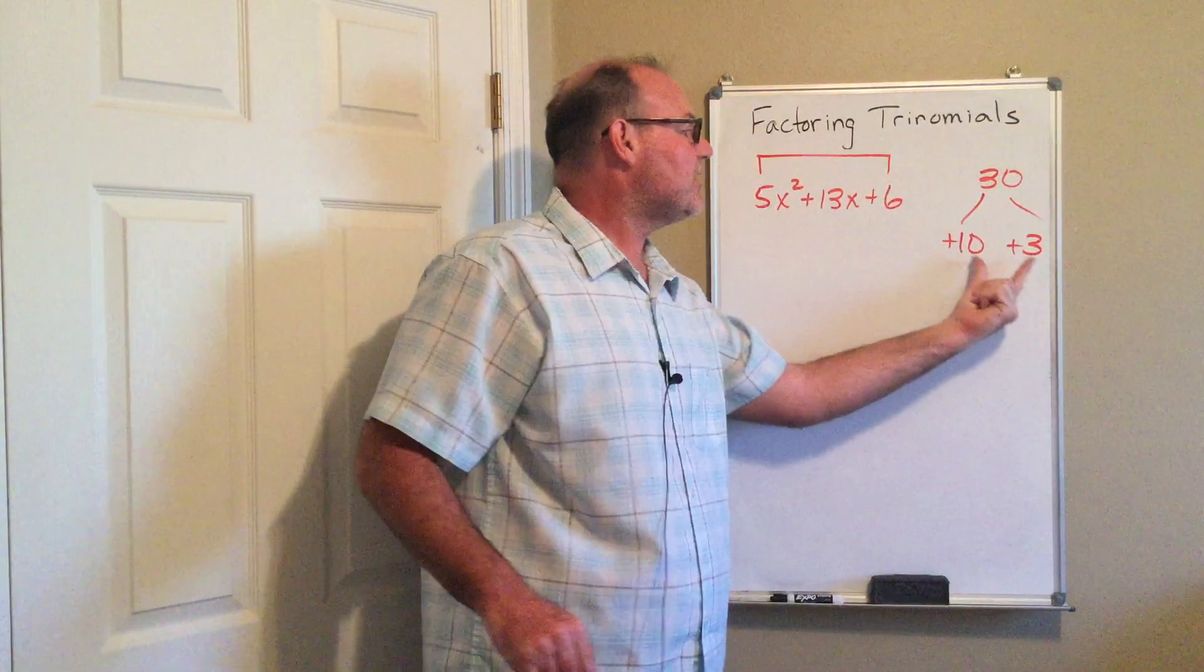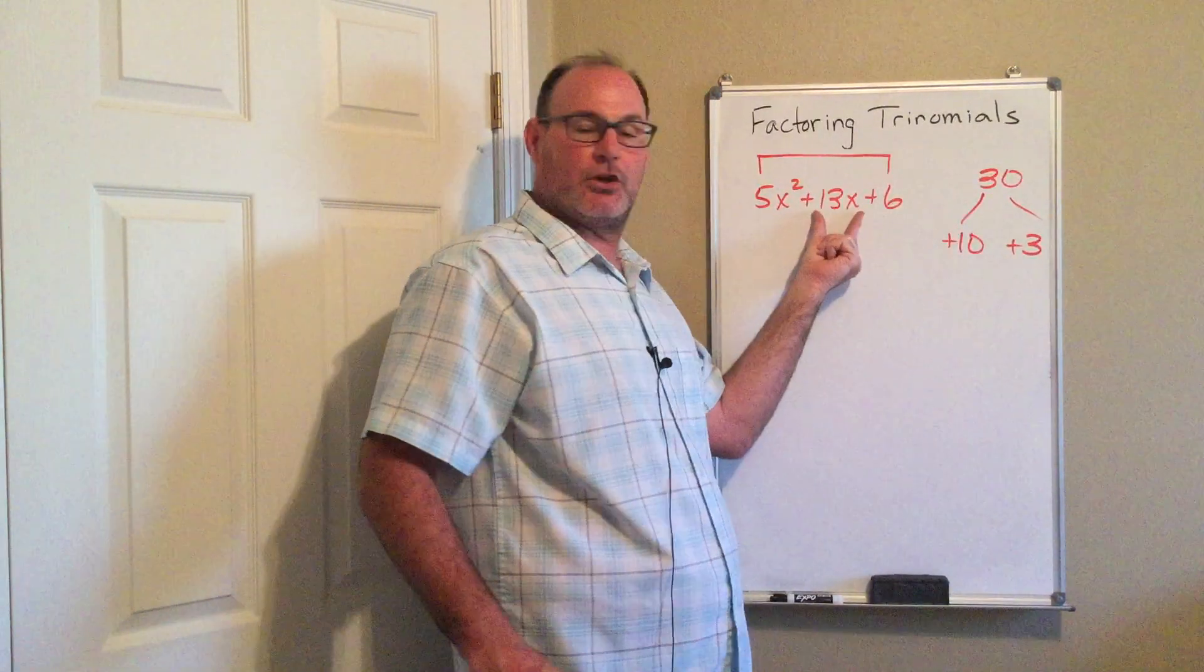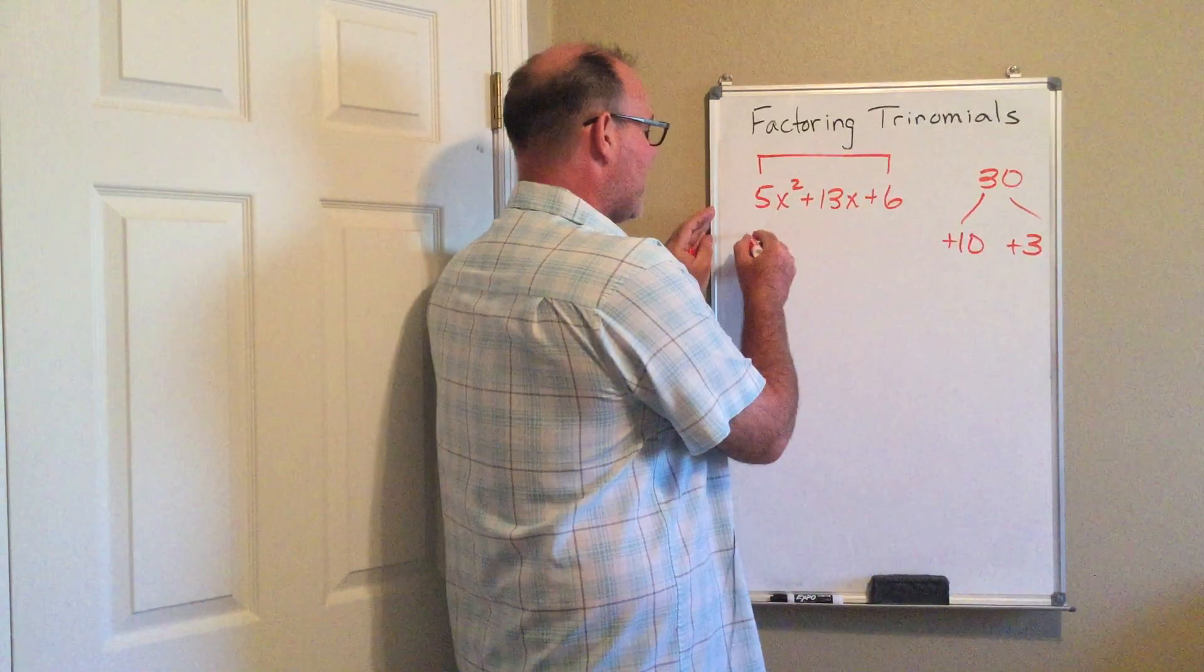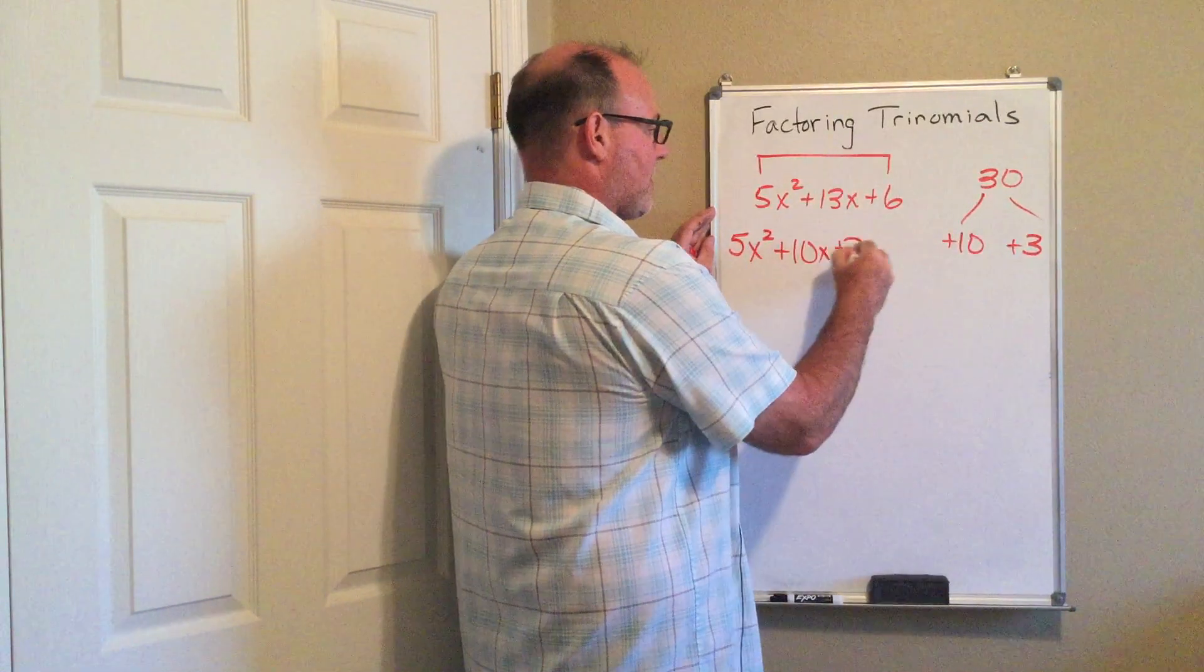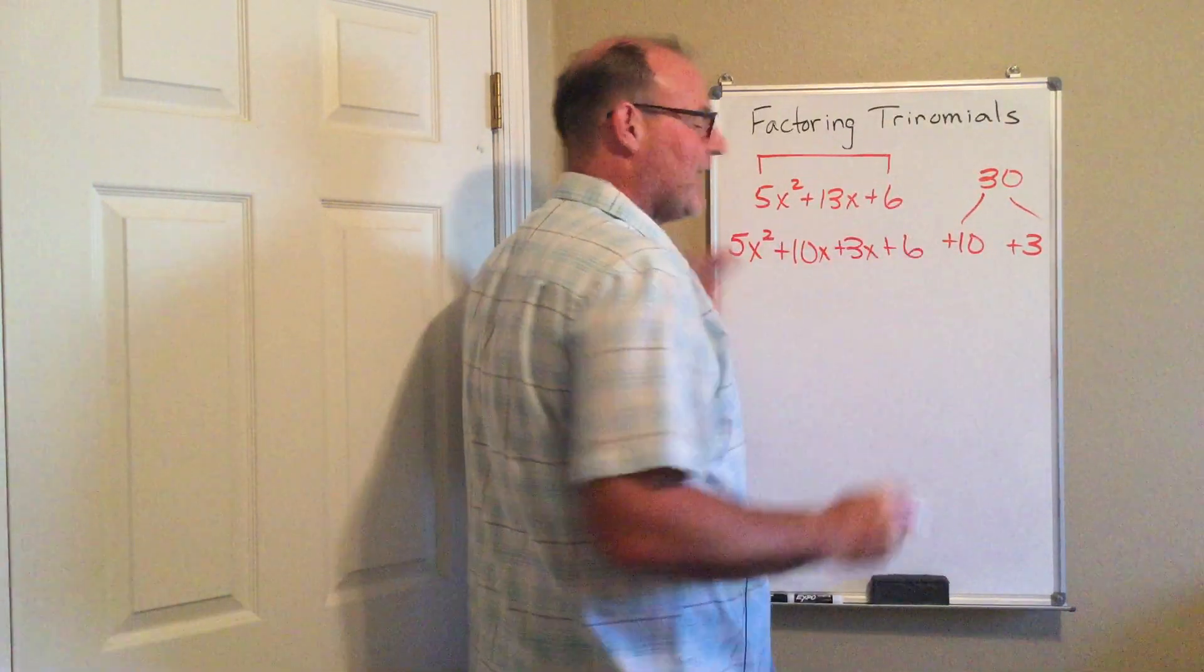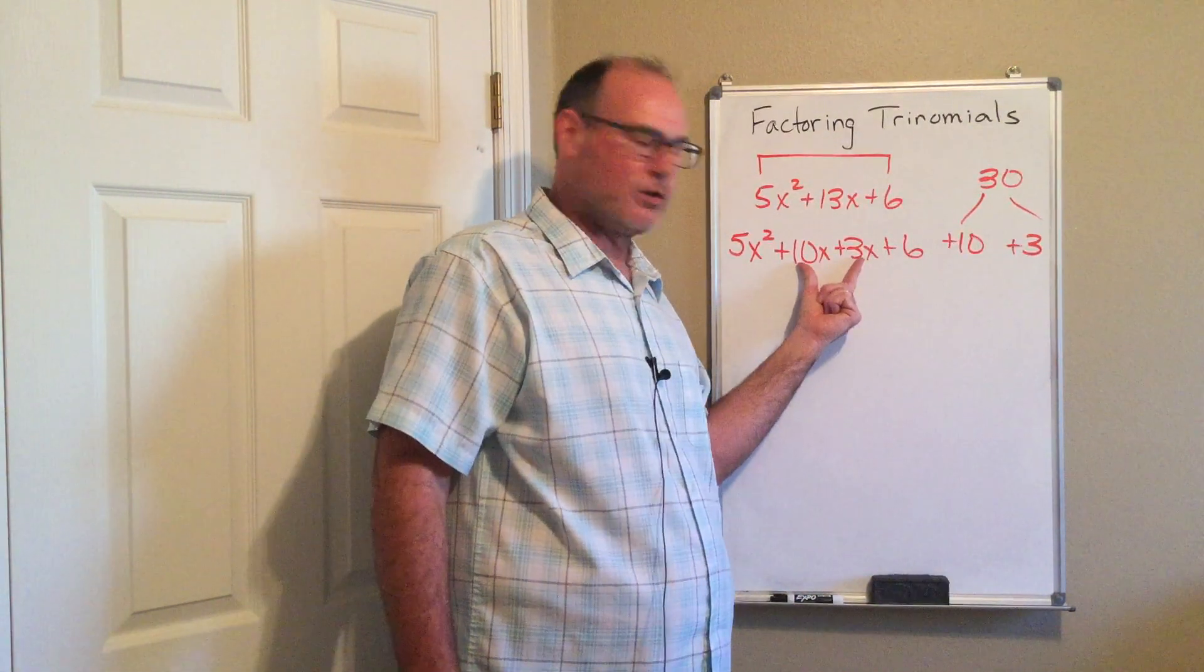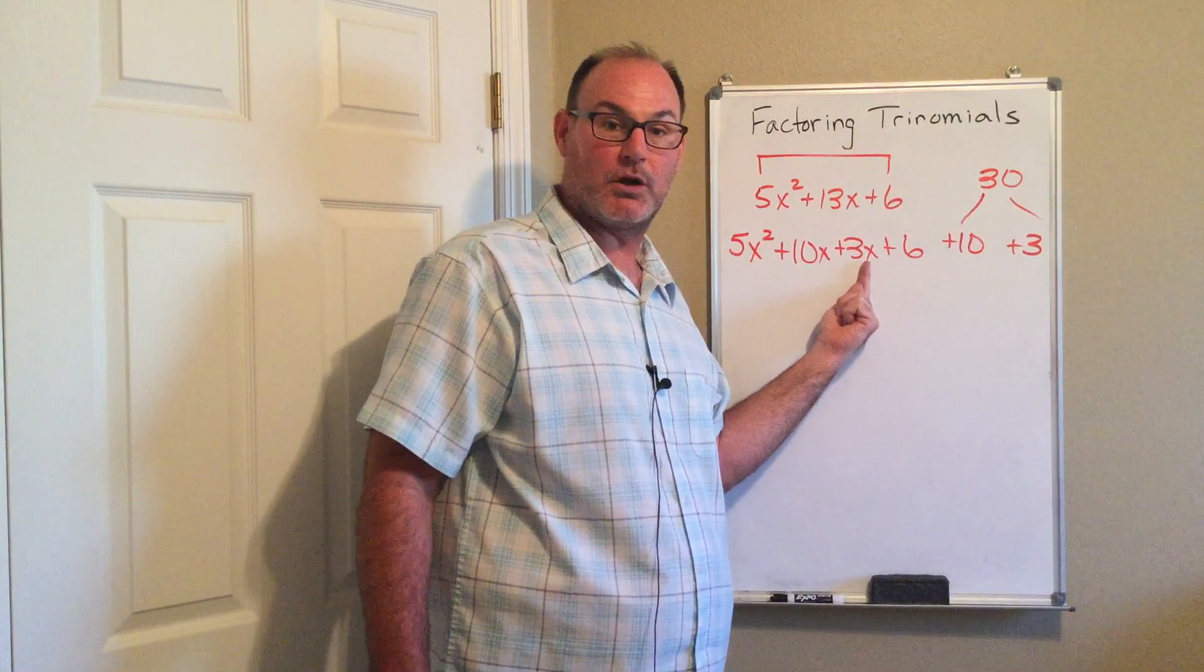Now what I'm going to do is use these two factors to take this middle term and break it apart into two terms. So my trinomial is going to become a polynomial with four terms. You might have the question, Professor Perkins, does it matter what order I put these two middle terms? Could I put the 3x here and the 10x there? And the answer is certainly yes, it will totally work.